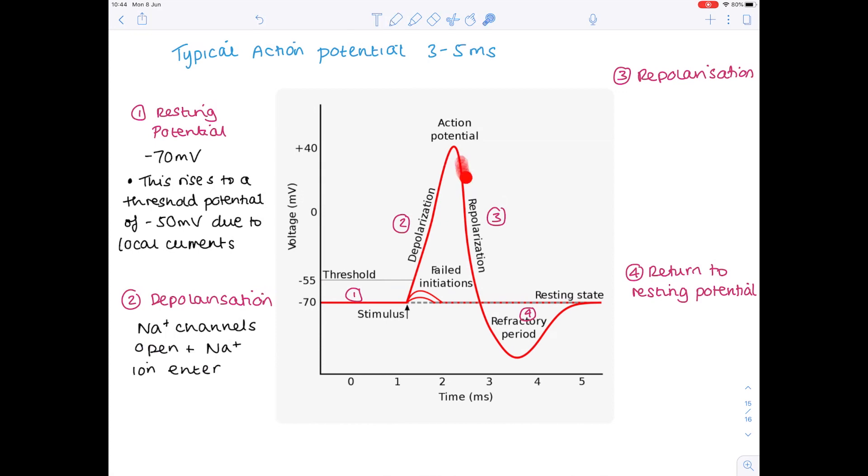In the repolarisation stage that we see down here, we see a reduction in that voltage. Why is that? That's because the potassium ion channels open and the potassium ions diffuse out.